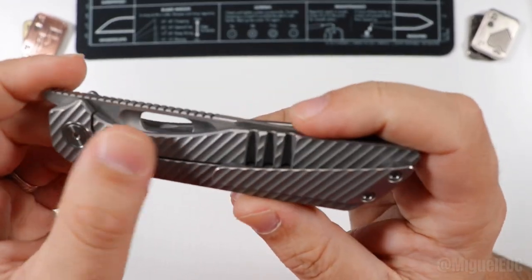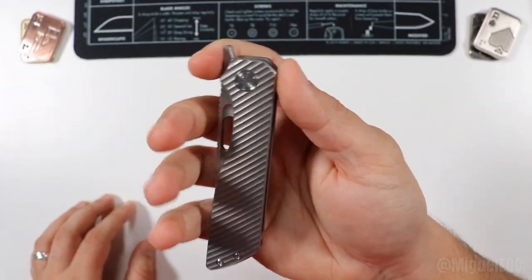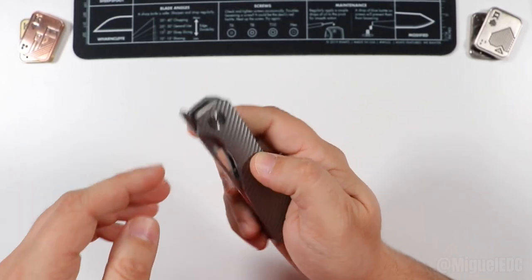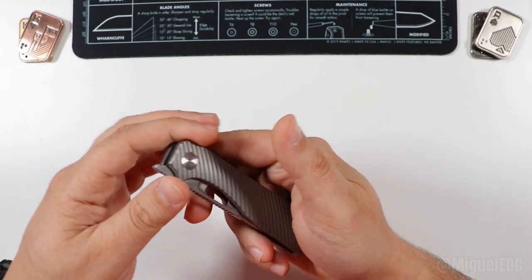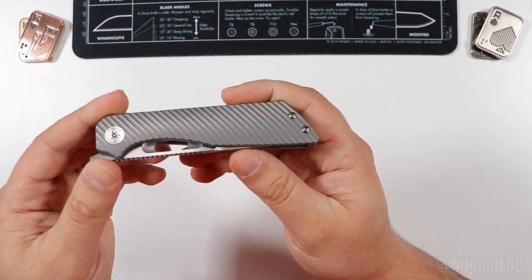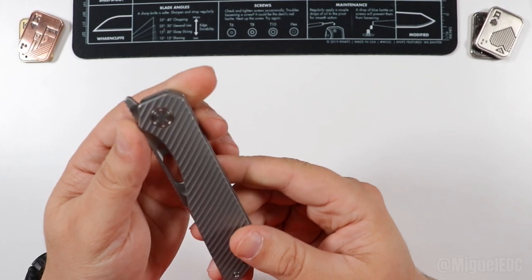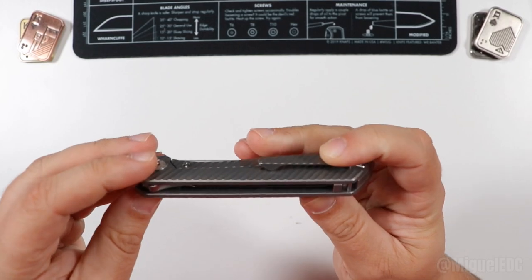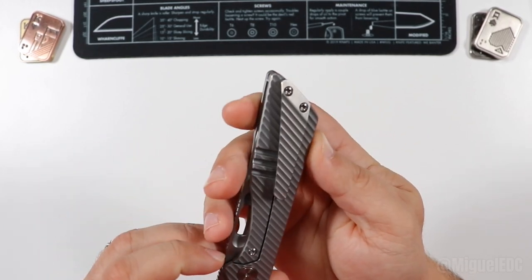This thing is a frame lock and it is a front flipper. Guys, if you know anything about the channel and you've been following me for any amount of time, I have been dying to get a front flipper in the channel for a while. I've been looking at some budget options and things like that, but man, this thing being my first front flipper, what a treat. So yeah, first impressions are very nice.